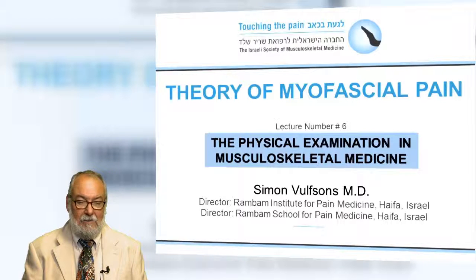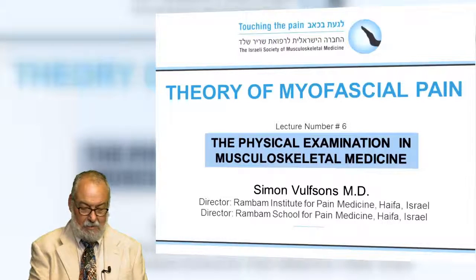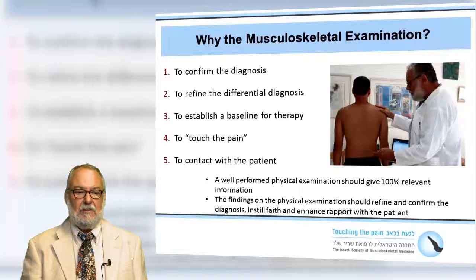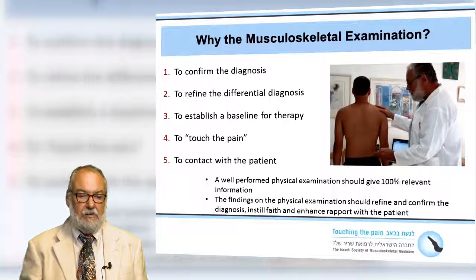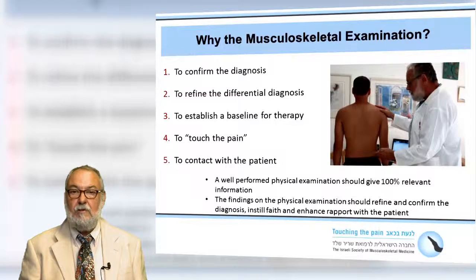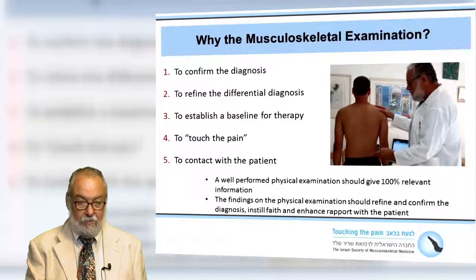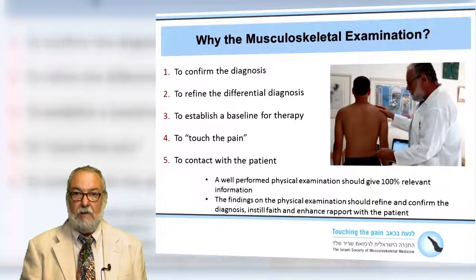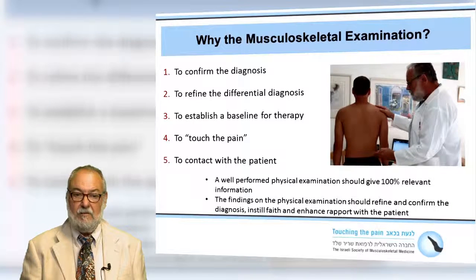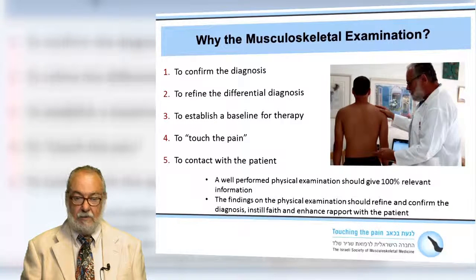Hello, my name is Simon Wilson and I'm very happy to present this lecture on the physical examination in musculoskeletal medicine. Why the musculoskeletal examination? After we've taken a history from our patient, we'd like to confirm the diagnosis, refine the differential diagnosis if necessary, and obviously establish a baseline for therapy. To touch the pain — this is absolutely important, as making contact with the patient is all about touching the pain. A well-performed physical examination will give 100% relevant information, and the findings should refine and confirm the diagnosis, instill faith, and enhance the rapport with the patient.